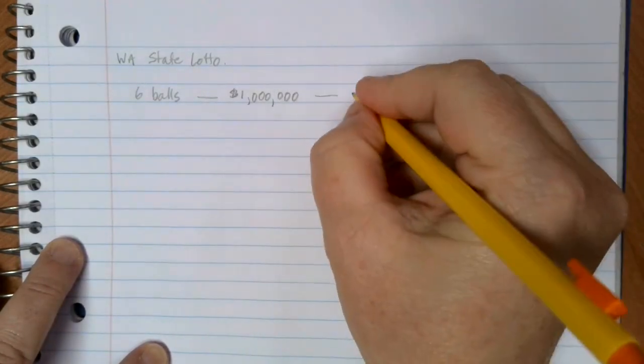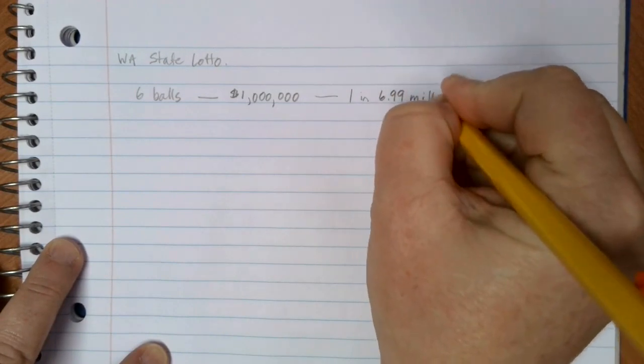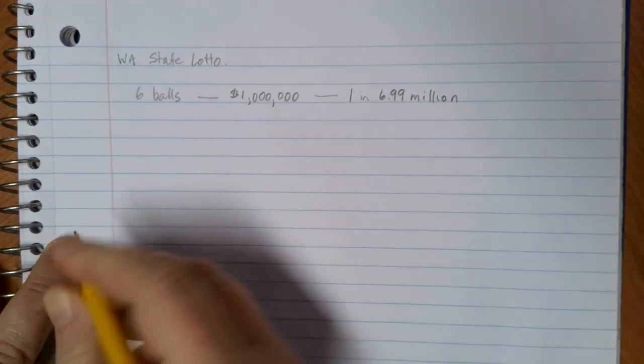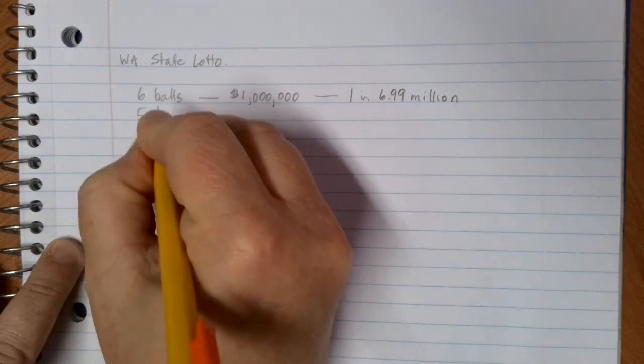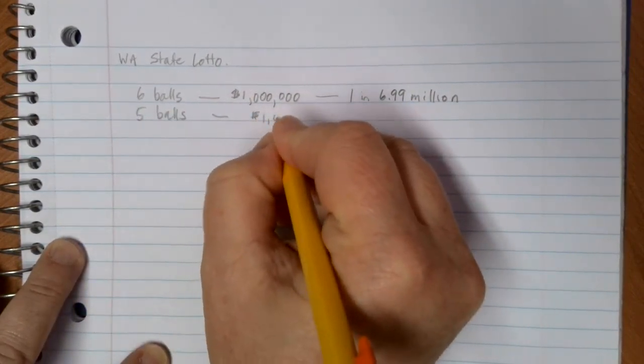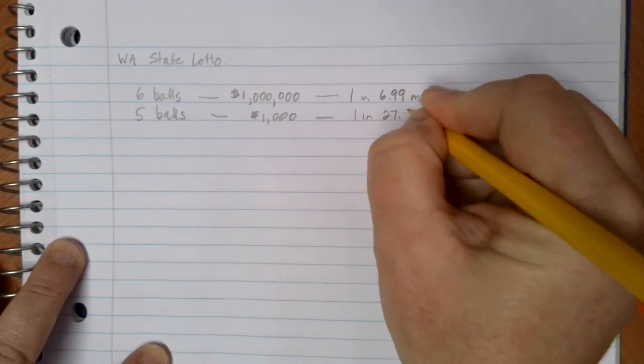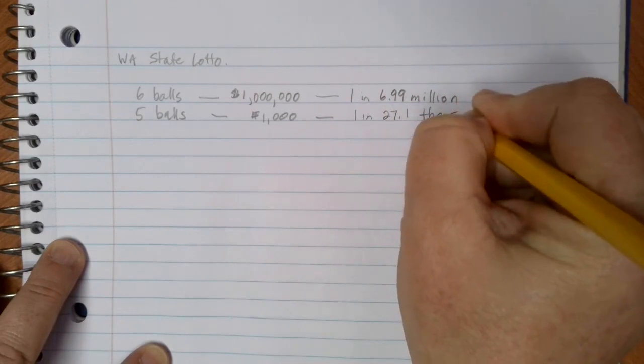In this case, the odds of winning are 1 in 6.99 million. If you pick five balls correctly, you do still get a prize. You get $1,000, and there's a 1 in 27.1 thousand chance of that occurring.